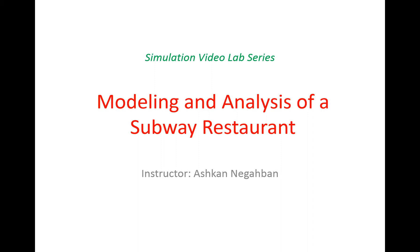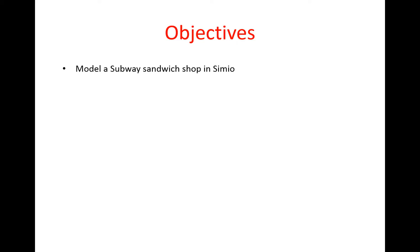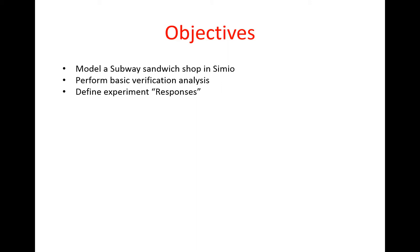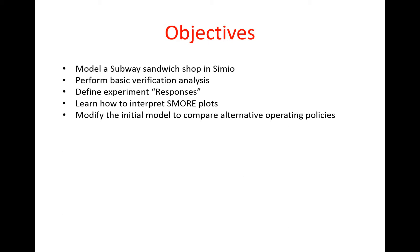Welcome to this module of the simulation video lab series. In this module we're going to build a model of a subway restaurant and analyze the performance of the system during lunch rush. The objectives for this lab are to build the model in Simio, perform basic verification analysis, define experimental responses, use small plots to interpret simulation outputs, and modify the initial model to compare alternative operating policies.